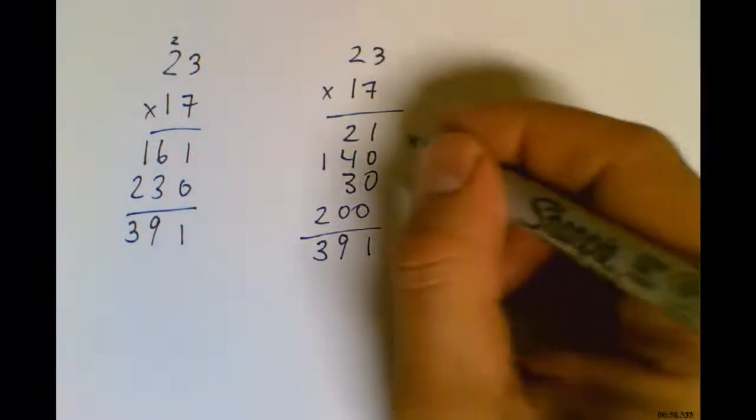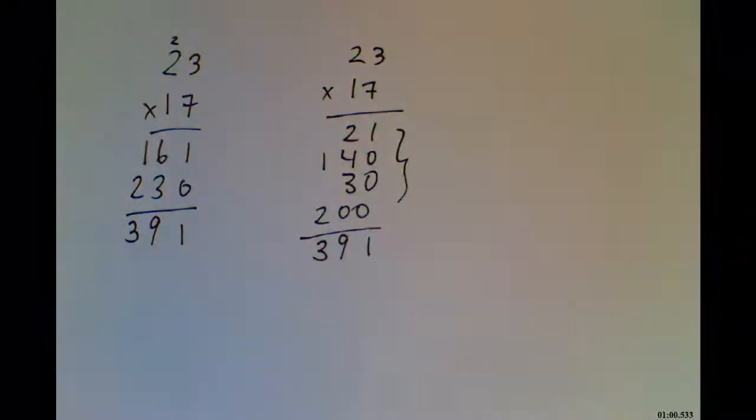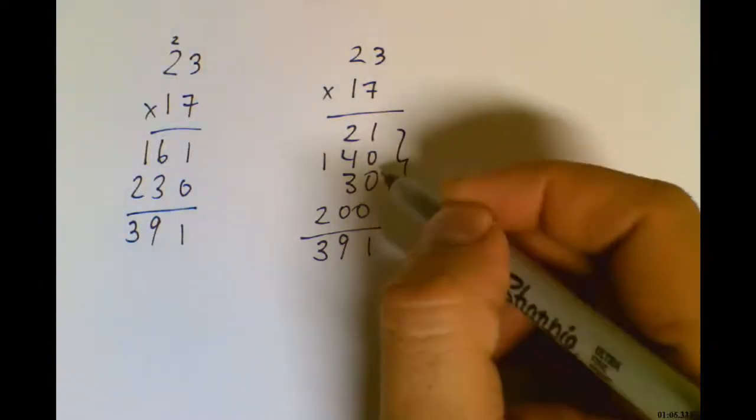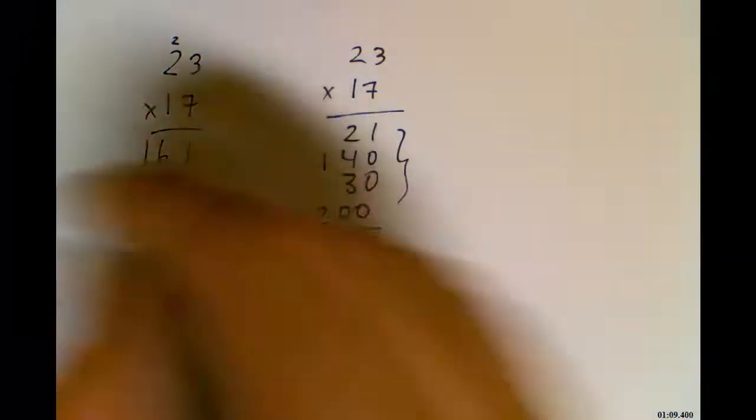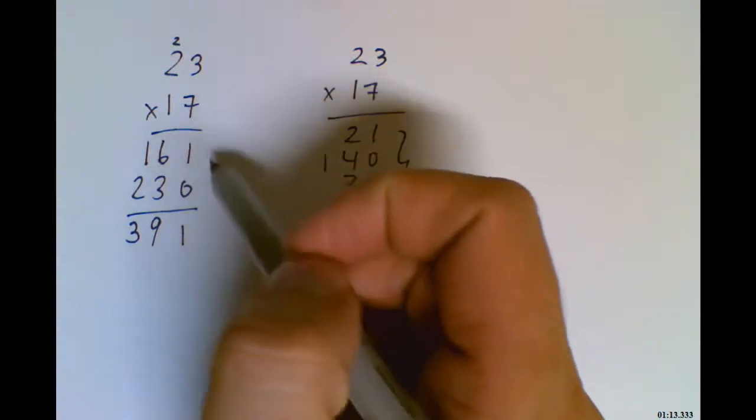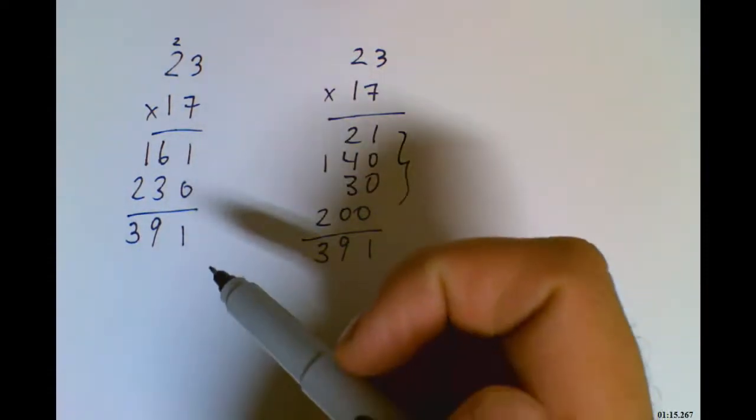Now, the advantage to this second method is it makes it a little easier to double-check my work because each of the multiplications I did up here is now present down here, so I can see what I did when I multiplied, whereas to recheck this work here I kind of have to do the multiplication over again. That can be a bit problematic.